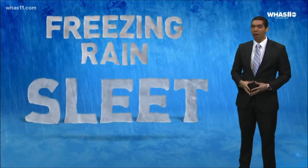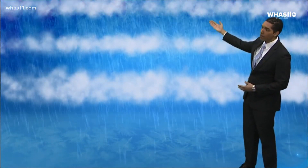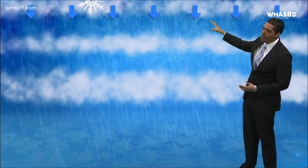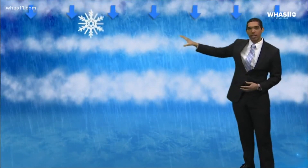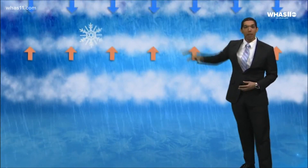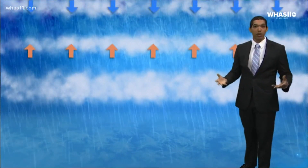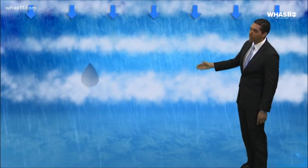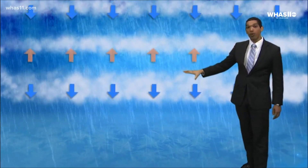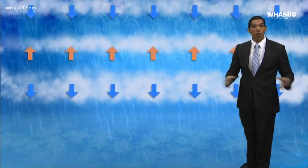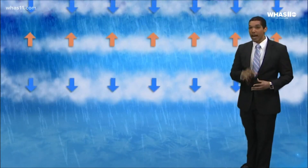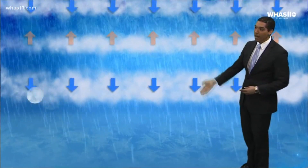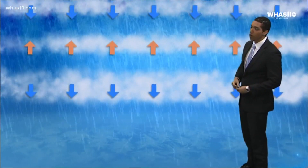However, sleet and freezing rain are both formed by an atmospheric warm air sandwich. Here's what happens. A snowflake falls from a top layer of a cloud deck. As it falls, it encounters a layer of air that's above freezing, which melts it into a regular old raindrop. Then as that raindrop falls, it encounters another layer of air that's below freezing and, if it's thick enough, will refreeze back into that tiny little ice pellet and bounce off of the ground.